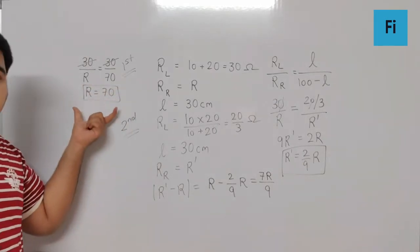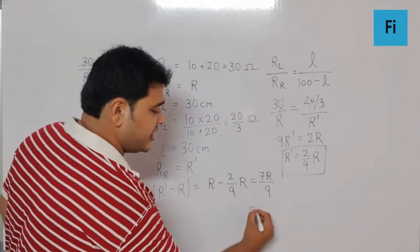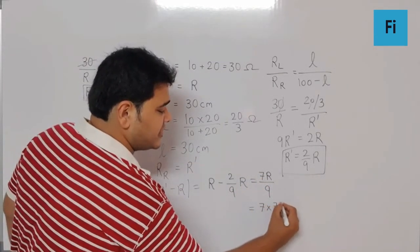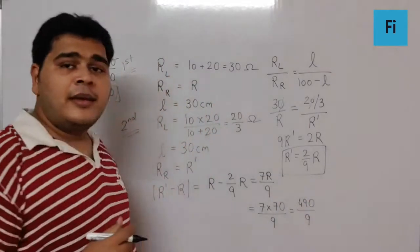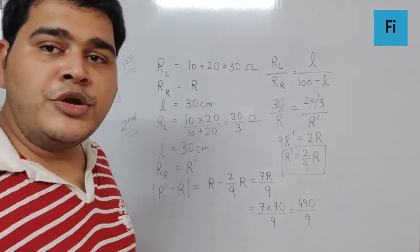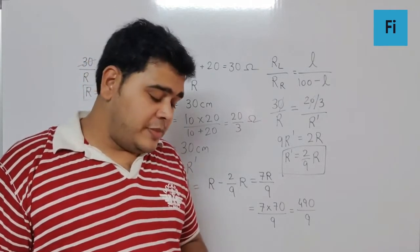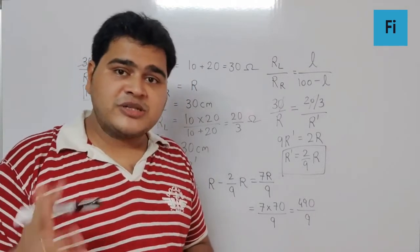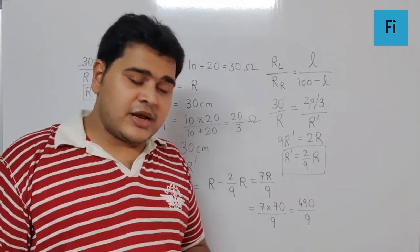Putting this R value, we get the change as 7 times 70 by 9, which is 490 by 9. To get the exact answer, divide 490 by 9. Approximately it will be greater than 49 - if we assume 9 as 10, it's around 49.